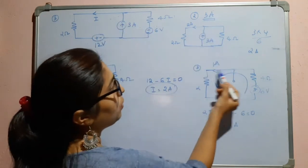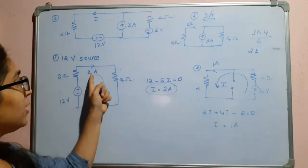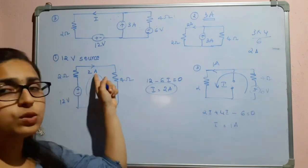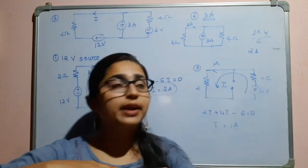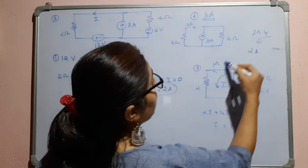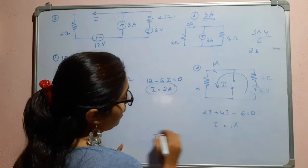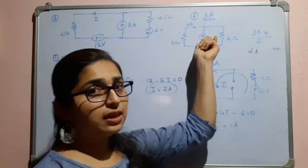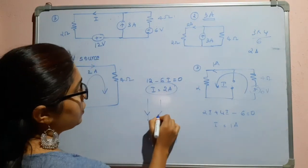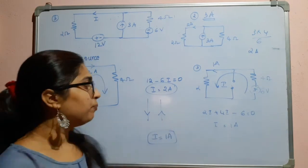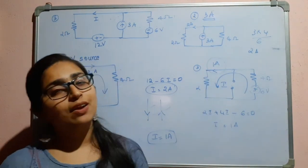We have 2 amperes from the 12 volt source and 2 amperes from the 3 ampere current source, but they are flowing in opposite directions, so they cancel each other. The remaining contribution is 1 ampere from the 6 volt source. Therefore, the current flowing through the 2 ohm resistor is 1 ampere.